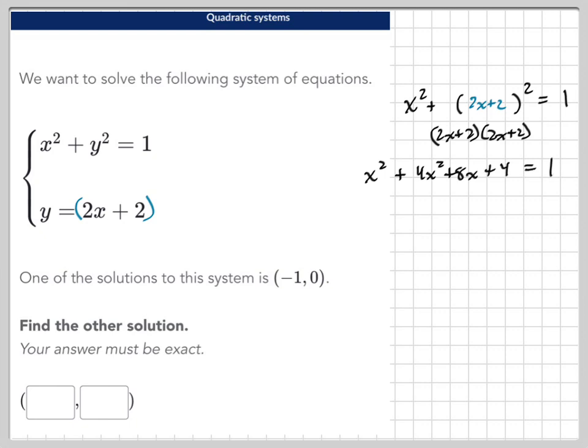Now because this is a quadratic, we're going to want to put everything on one side, all the numbers, and so it should equal 0. And we're going to combine like terms. So when we combine like terms, we get 5x squared plus 8x plus 3, and the other side equals 0. We got the 3 because we subtracted 1 from both sides.